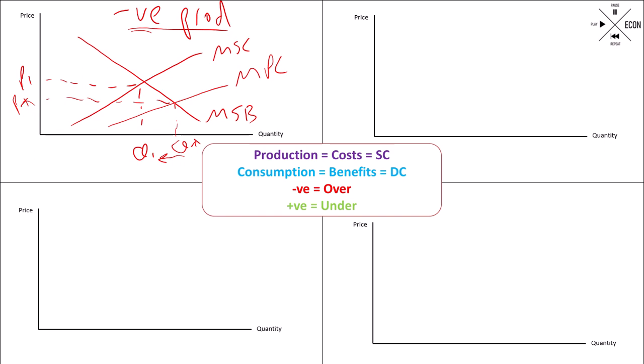The final thing you have to do is identify the area of dead weight loss. In order to do that, you go from your free market position to your socially optimum position and make a triangle out of that. That's your area of dead weight loss. The key thing to remember is the dead weight loss arrow points the same way as the arrow you drew to help you understand where to put your second curve.